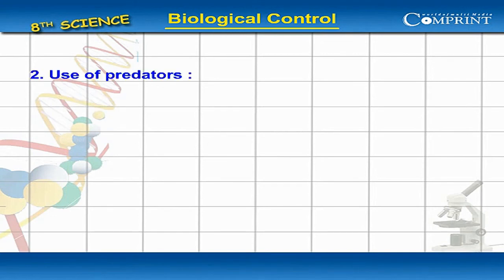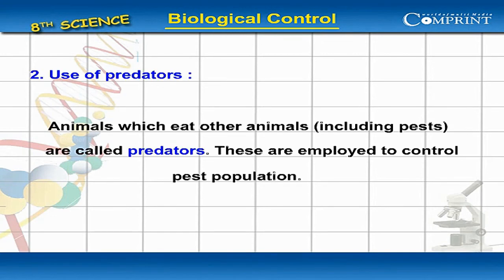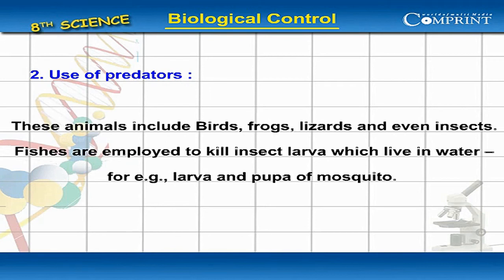Use of Predators. Animals which eat other animals, including pests, are called predators. These are employed to control pest population. These animals include birds, frogs, lizards, mammals, and even insects. Fishes are employed to kill insect larvae which live in water.